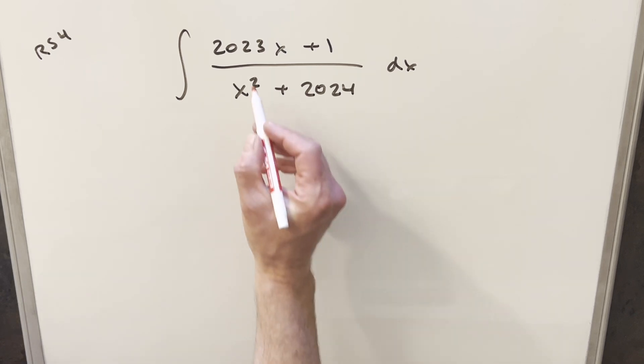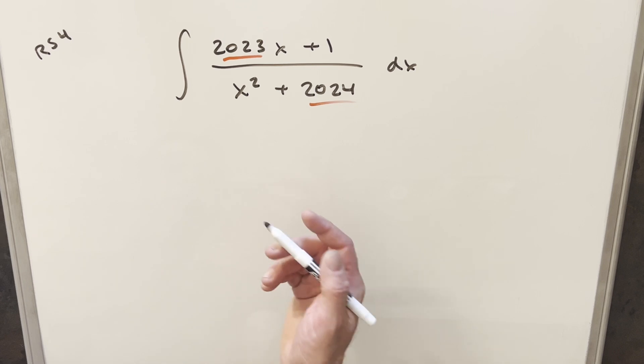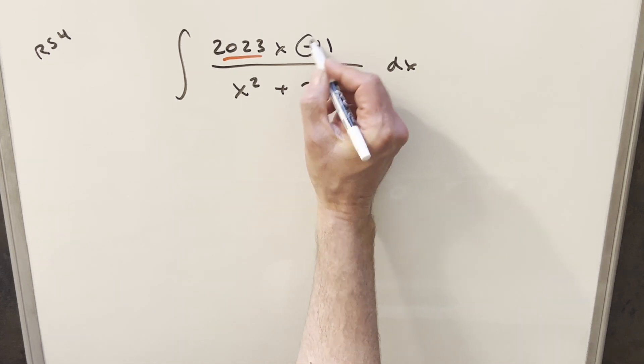Okay, to get started with this, we notice they use some really big numbers here, 2023, 2024, but actually outside of large numbers, this really isn't too bad. We can set this up for a u-substitution. We can split this into two integrals because we've got this plus sign here.